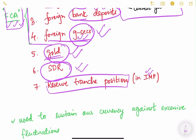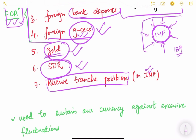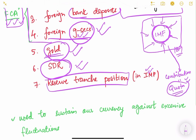The IMF is formed by contributions from its 189 member countries, who deposit money in the form of international or domestic currencies. Each country's contribution equals its quota in the IMF — this quota also determines how much loan a country can avail during a balance of payments crisis. Out of this quota, there is a reserve quota.